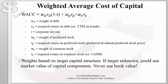To compute WACC, we use this general formula: the weight of debt times the required return on debt multiplied by one minus the tax rate, plus the weight of preferred shares times the required return on preferred shares, plus the weight of common shares times the required return on common equity. On the exam they will tell you the required return on debt, preferred shares, and equity.